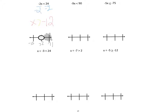The second one: negative 9x is less than 90. We divide by negative 9. 90 divided by 9 is 10, signs are different so the answer is negative, and our symbol flips. We get that x is greater than negative 10. We flip because the number being multiplied by x was negative 9. We put an open circle at negative 10 — it's open because we are not including it — and then shade everything to the right.